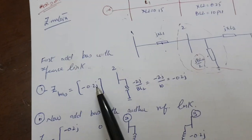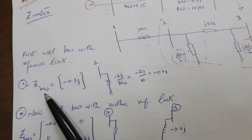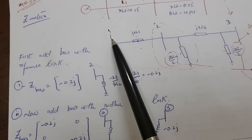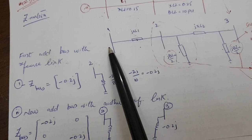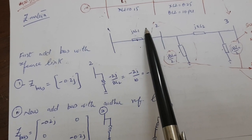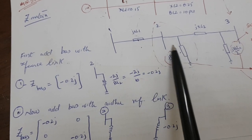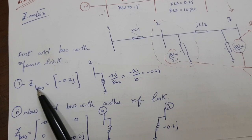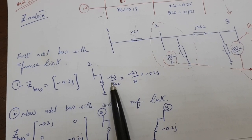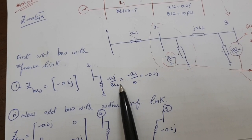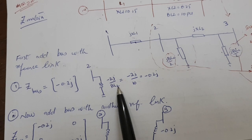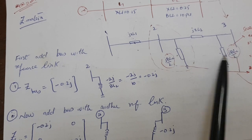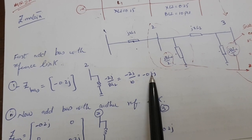Now for the first step, you have to take the bus with the reference node. You cannot take bus one because bus one is connected to bus two with a reactance and has no reference node. So take bus number two as the reference bus, since it has a reference node. Our Z-bus equals minus 0.2j. Here we compute minus 2j / B_L2, where B_L2 is 10, giving 0.2j, so we place 0.2j entries accordingly.